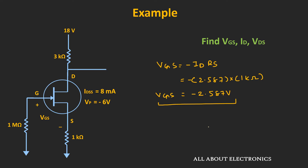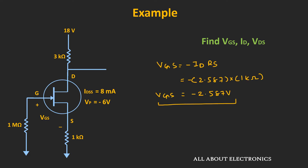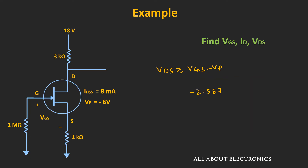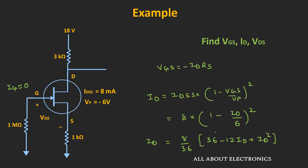Now let's validate the saturation assumption. For an N-channel JFET, the circuit operates in saturation when VDS ≥ VGS − VP. With VGS = −2.587 V and VP = −6 V, we get VGS − VP = 3.413 V. Since VDS = 7.652 V, which is greater than 3.413 V, the circuit is indeed operating in the saturation region, confirming we can use the saturation expression.